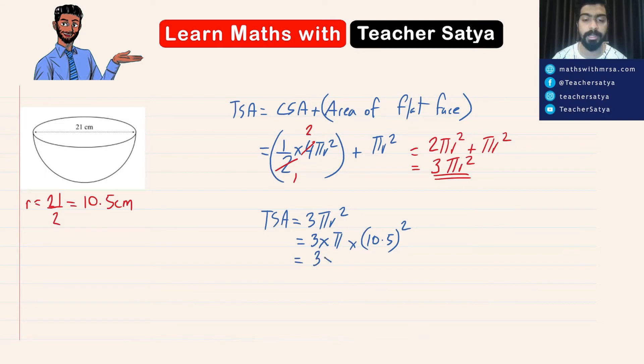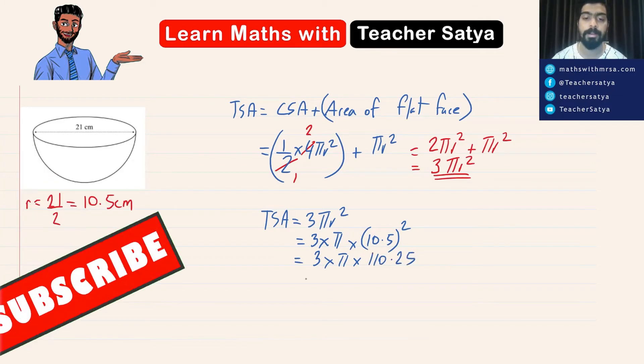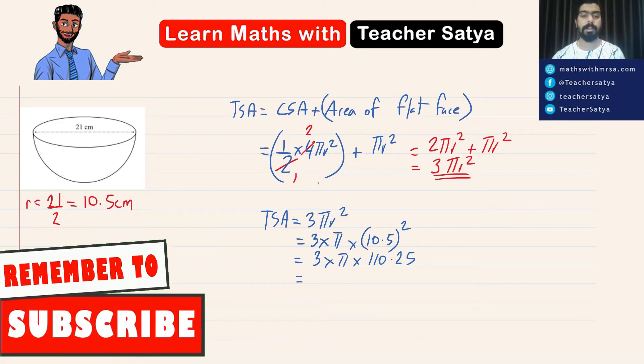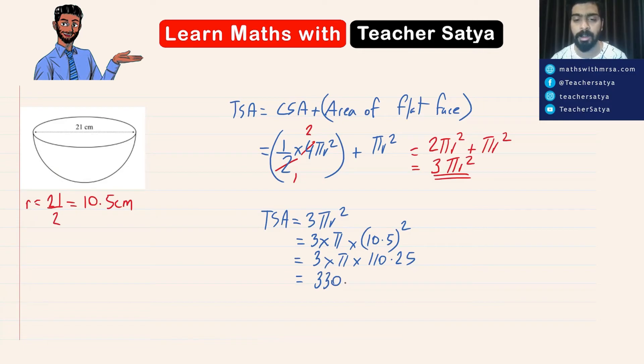Which is equal to 3 times pi times 10.5 to the power of 2 should give us 110.25. Right guys? Now 3 times 110.25 should give us 330.75 pi.